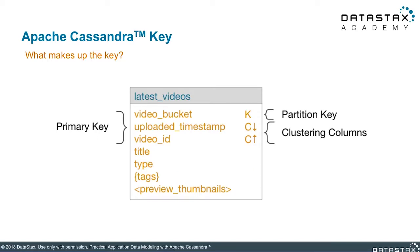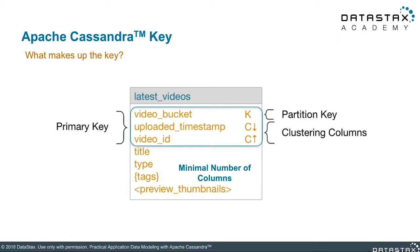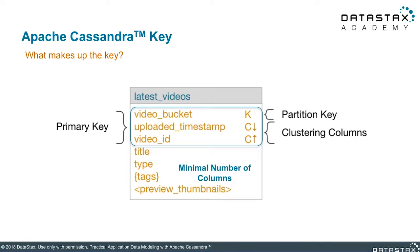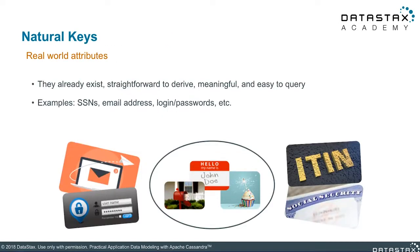When considering what keys to use to make up your primary key, you usually decide between two different types: natural keys and surrogate keys. Natural keys represent attributes that already exist within your data. When thinking about a user's table, you can define a unique user using their email address, or maybe a combination of their last name and date of birth.